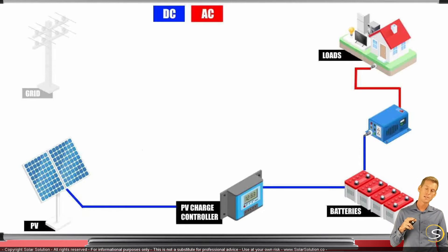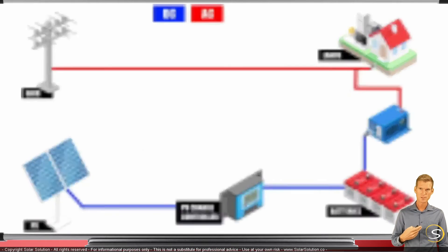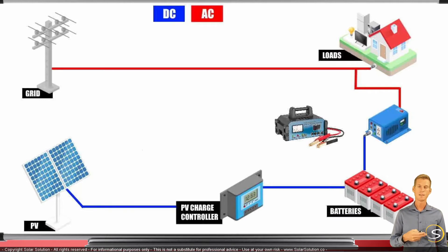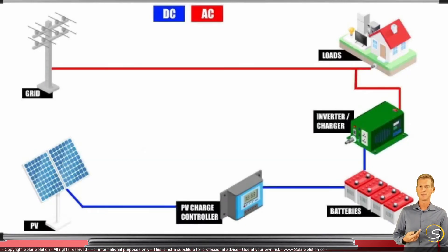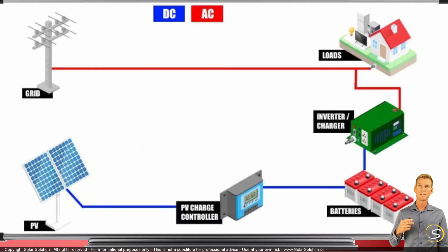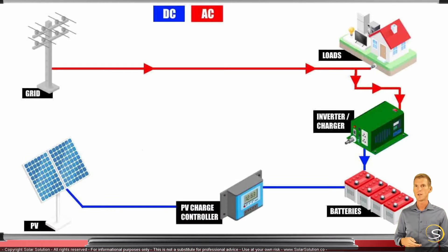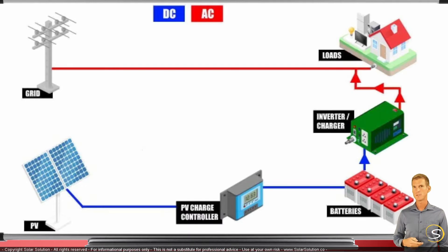If you have such a system and are connected to the grid, you would also install a battery charger. The battery charger can charge your batteries with power from the grid when there's not enough solar power. Nowadays a separate battery charger and inverter are often combined into one unit called an inverter-charger. This gives you a battery-based, grid-tied solar energy system where the inverter-charger can draw power from the grid to charge batteries, or provide power to your house or the grid depending on availability.